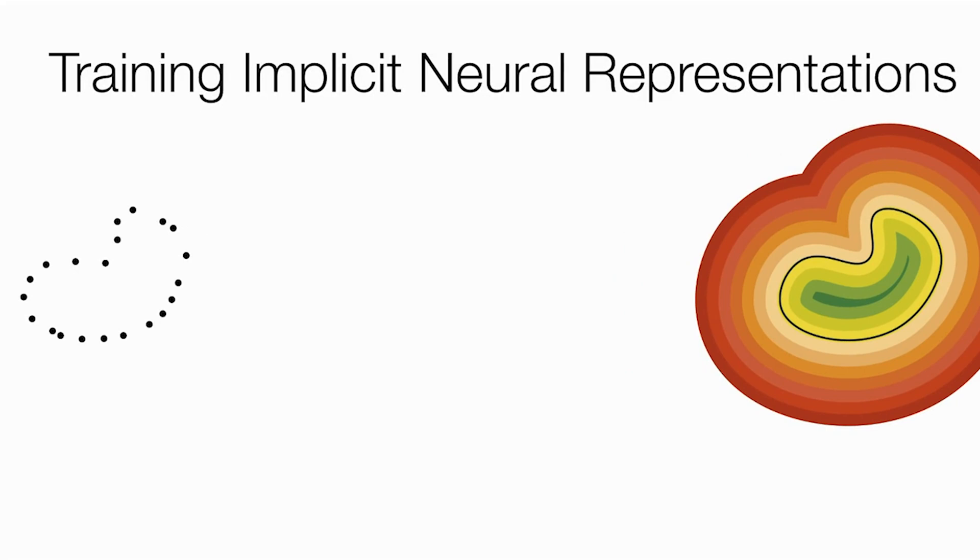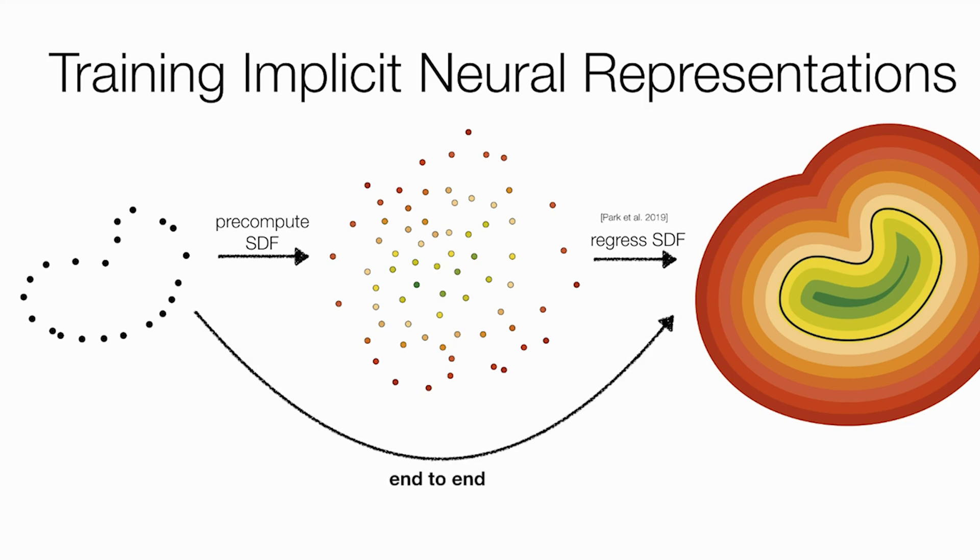Previous works suggested a two-stage solution. First, approximate a sign-distance function on the prescribed data points. And second, regress a neural network to fit this data. Our approach, however, learns an SDF directly from raw point clouds in an end-to-end fashion.